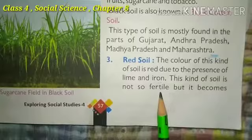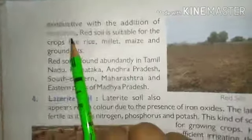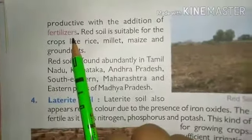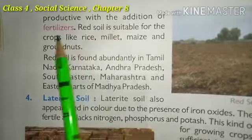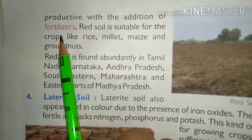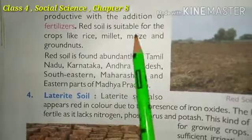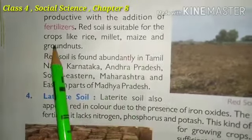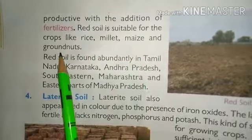This kind of soil is not so fertile, but it becomes productive with the addition of fertilizers. This red soil is not very productive on its own, but if we add some fertilizers or manure to it, it becomes productive. Red soil is suitable for crops like rice, millet, maize, and groundnut.